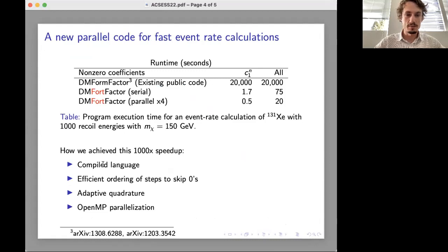Compared to the existing public code, my new code speeds up event rate calculations by a factor of a thousand. This is mostly due to using a compiled language, efficient ordering of the steps in the algorithm, and the application of parallel computing.